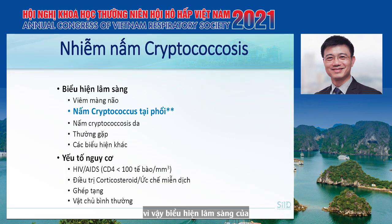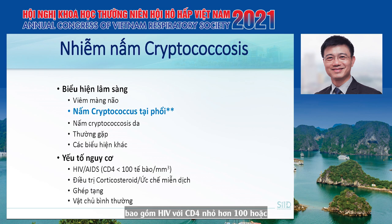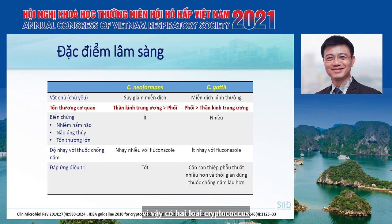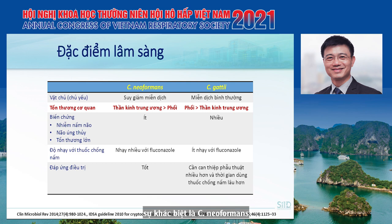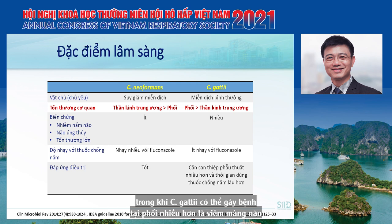Clinical presentations of cryptococcosis include cryptococcal meningitis and pulmonary cryptococcosis as the two most common forms. Risk factors include HIV with CD4 less than 100, or those receiving immunosuppressive agents or organ transplantation. There are two species: Cryptococcus neoformans and Cryptococcus gattii. C. neoformans mainly causes disease in immunocompromised individuals, whereas C. gattii can cause infection in immunocompetent hosts and is more likely to cause pulmonary cryptococcosis than meningitis.